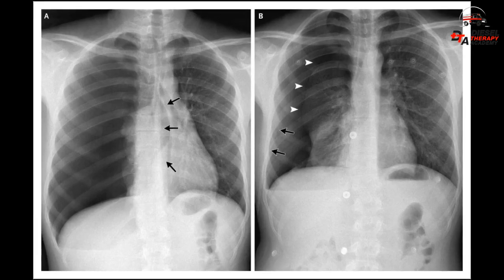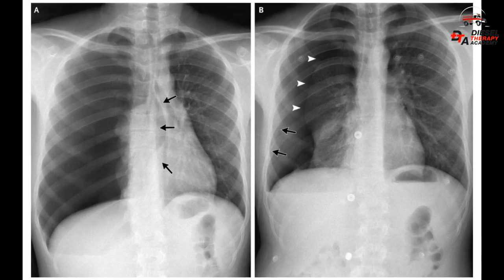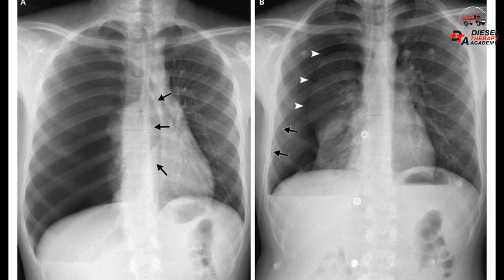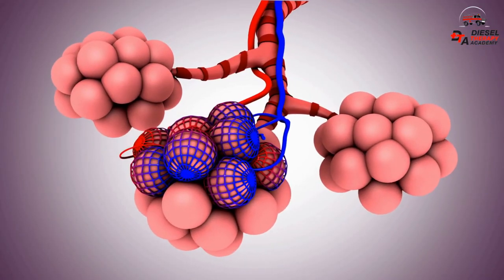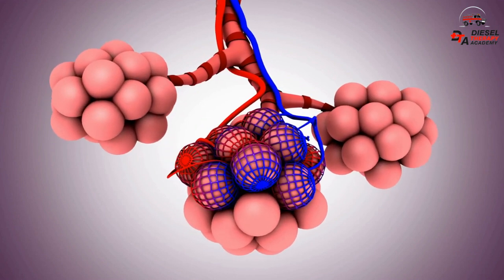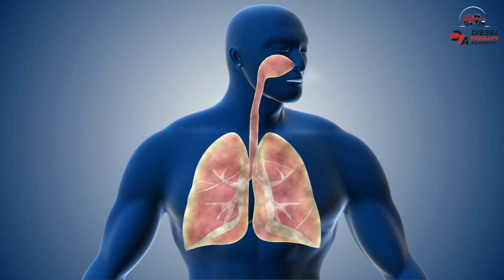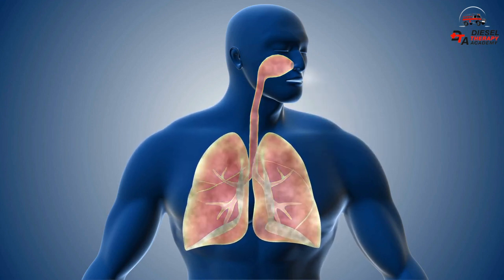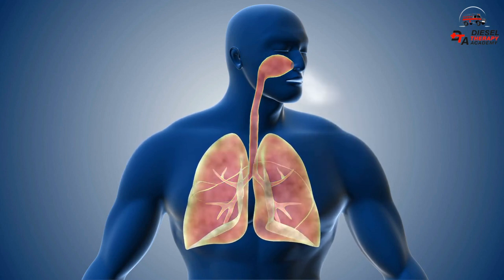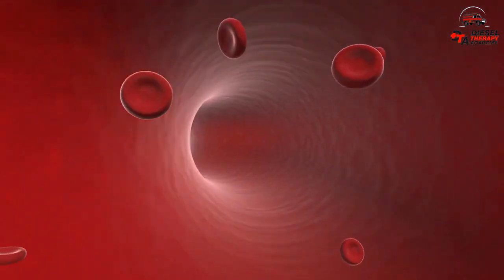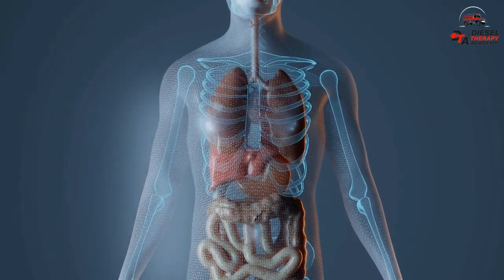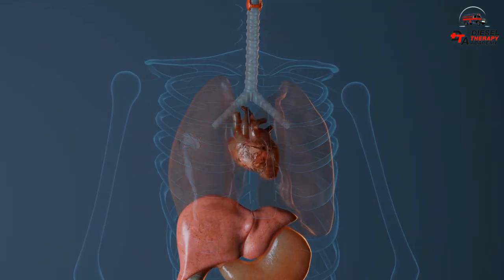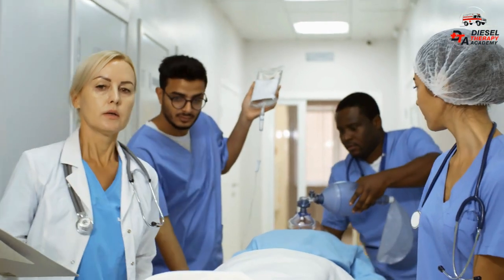Tension pneumothorax occurs when air accumulates between the chest wall and the lung and increases pressure in the chest, reducing the amount of blood returned to the heart. In an ordinary pneumothorax, injury to a lung allows a certain amount of air to enter the space between the lung and the chest wall, or pleural space. Typically the air stops accumulating. However, in tension pneumothorax, air continues to enter the pleural space as the person breathes and pressure rises inside the chest. The rise in pressure reduces the amount of blood returning from the body to the heart because the blood cannot force its way into the chest and back to the heart. As a result, the heart has less blood to pump to the body, resulting in shock. These effects can occur rapidly, particularly in people using a mechanical ventilator. Tension pneumothorax can rapidly be fatal.